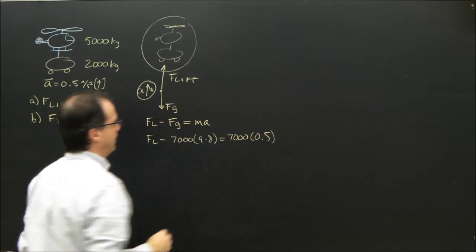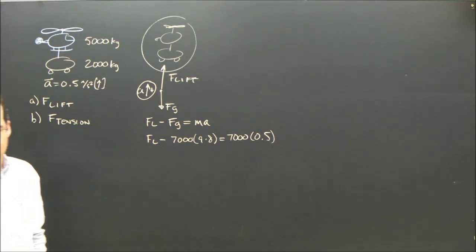We have 7,000 times 9.8 equals, and the mass lifted is again 7,000 and the acceleration is 0.5. So 7,000 times 9.8,